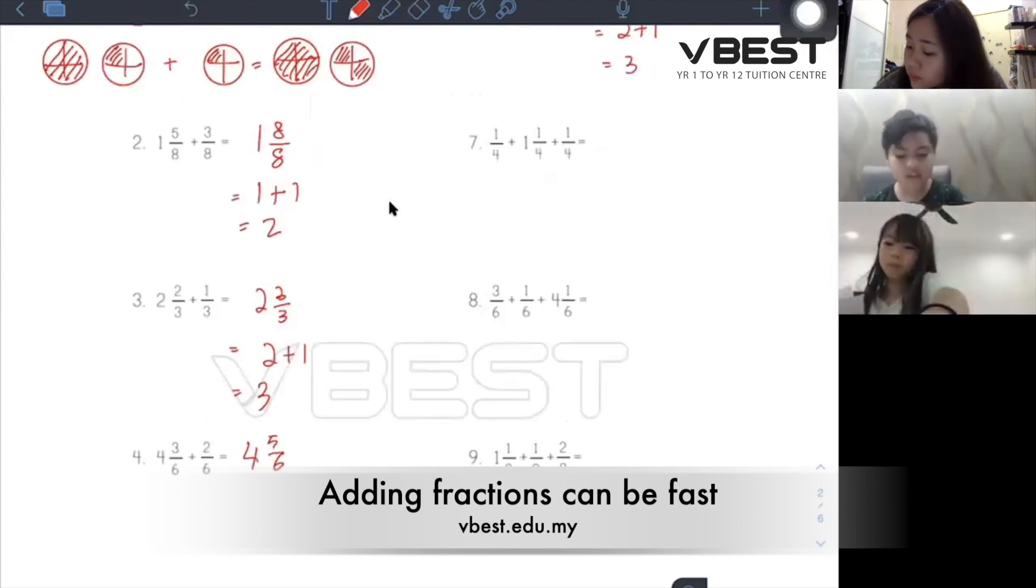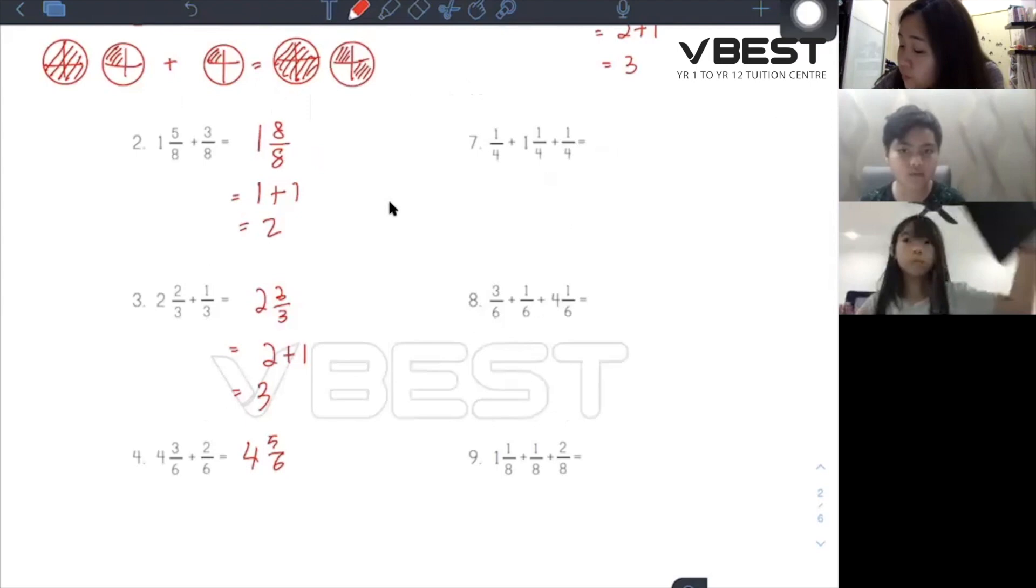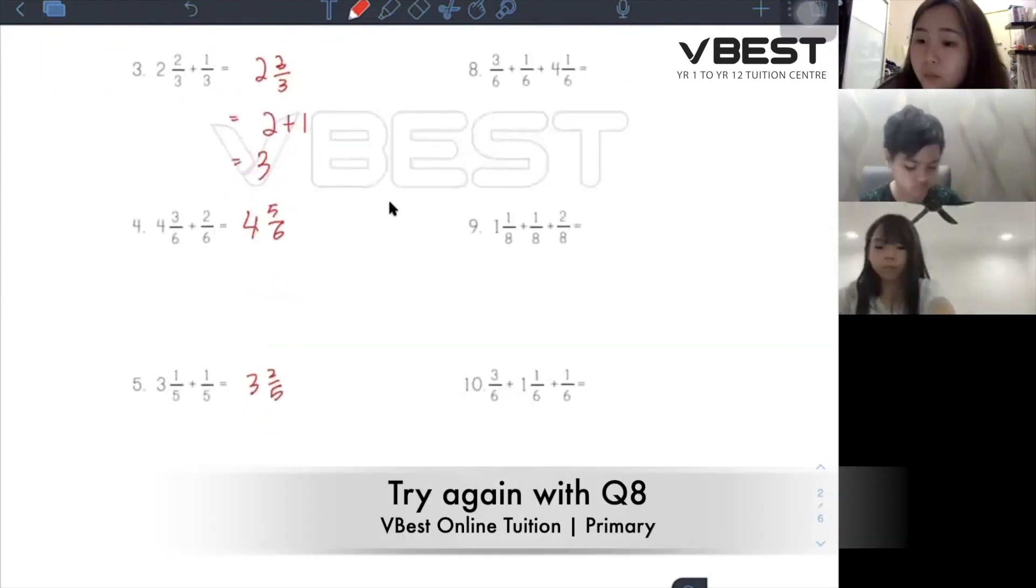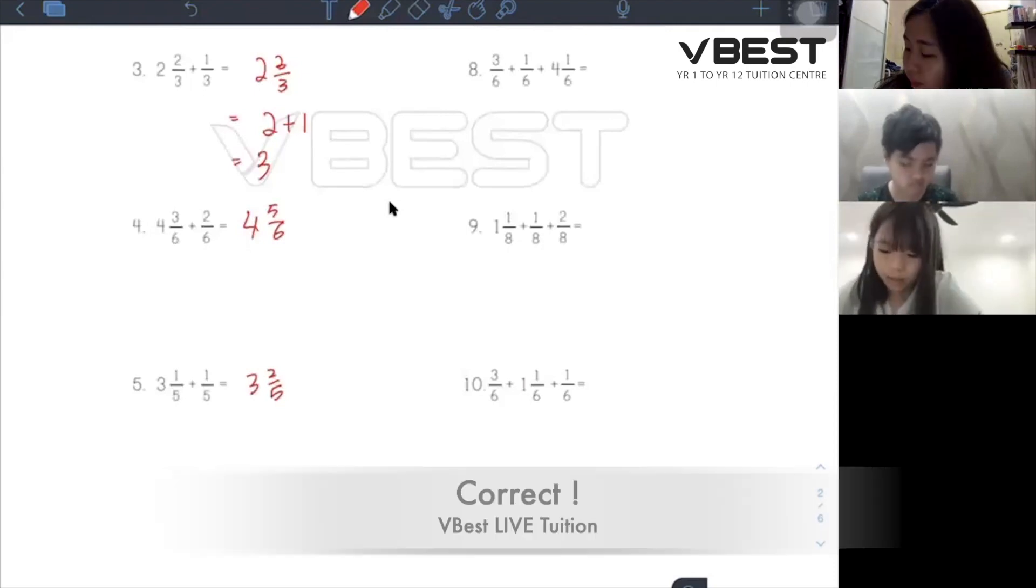Question seven: one two over four. Okay, correct. Question four: four five over six. Correct.